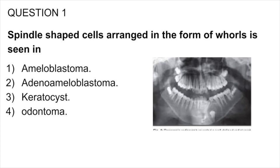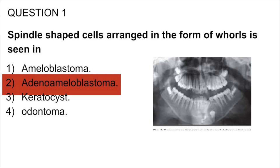Question 1. Spindle-shaped cells arranged in the form of walls is seen in: ameloblastoma, adenoameloblastoma, or keratocyst odontoma. The answer is adenoameloblastoma.